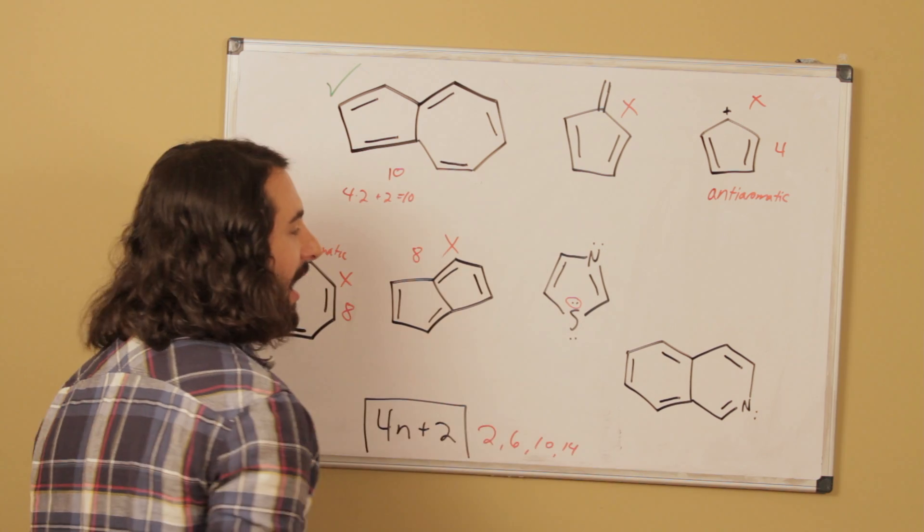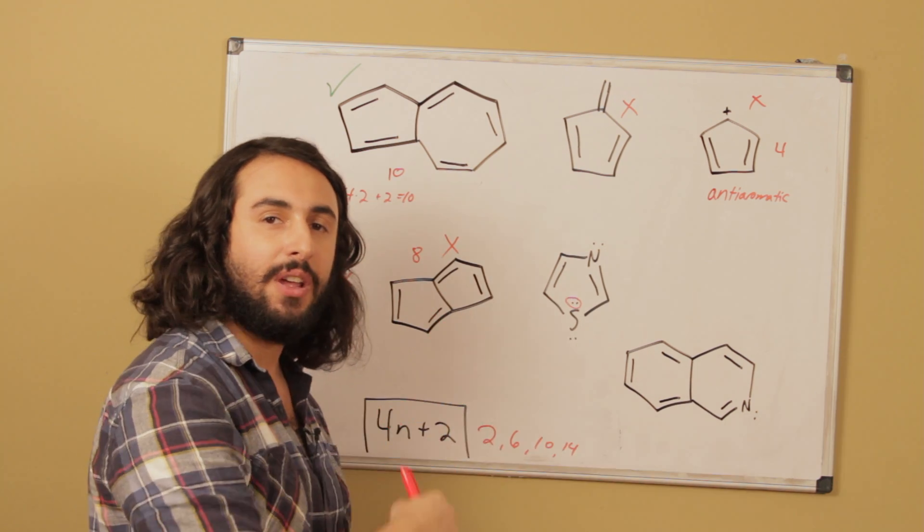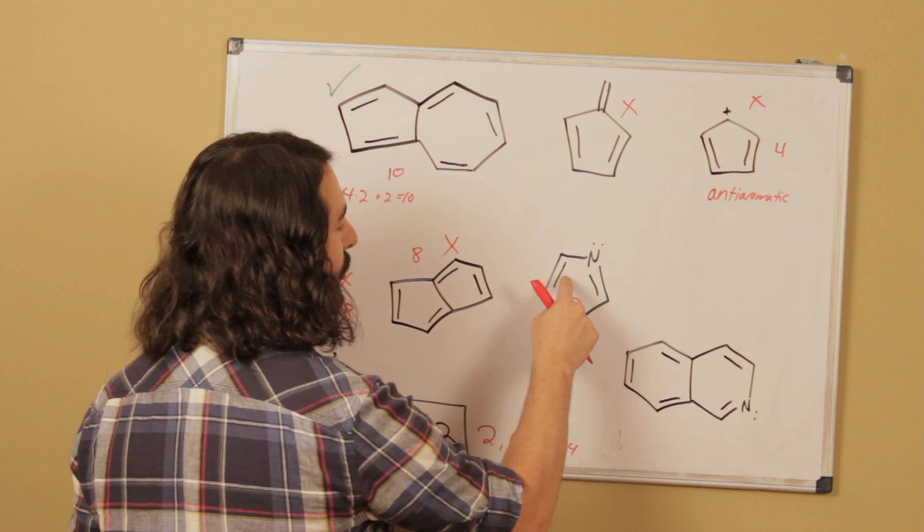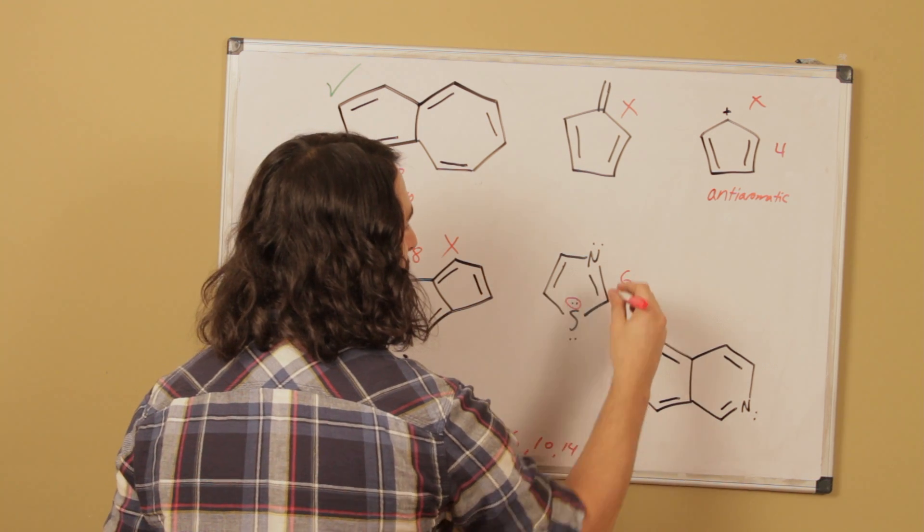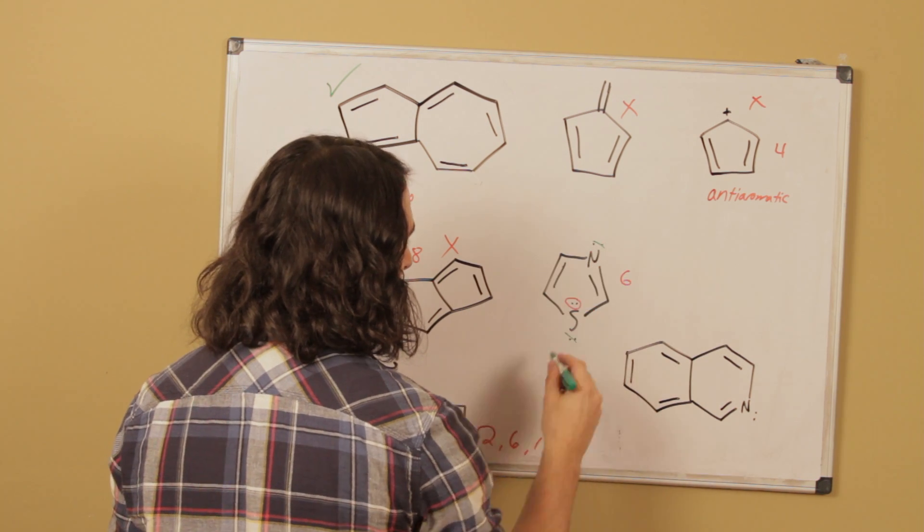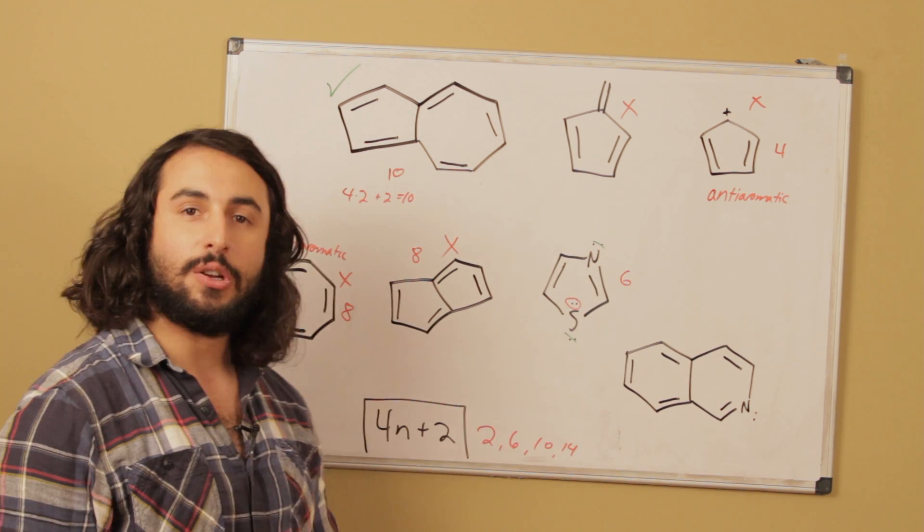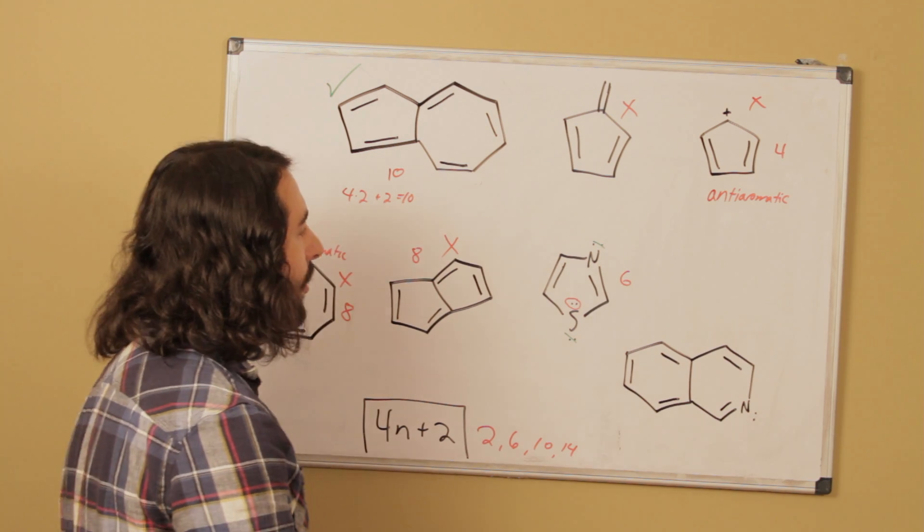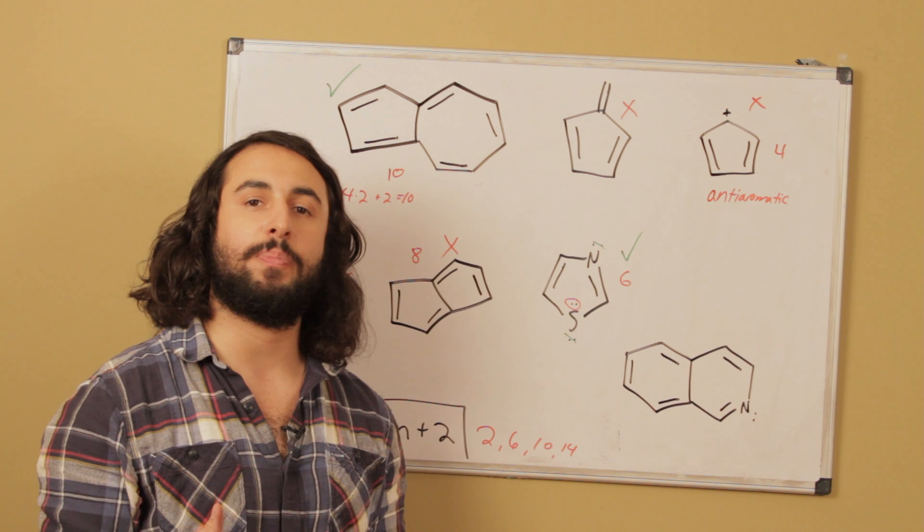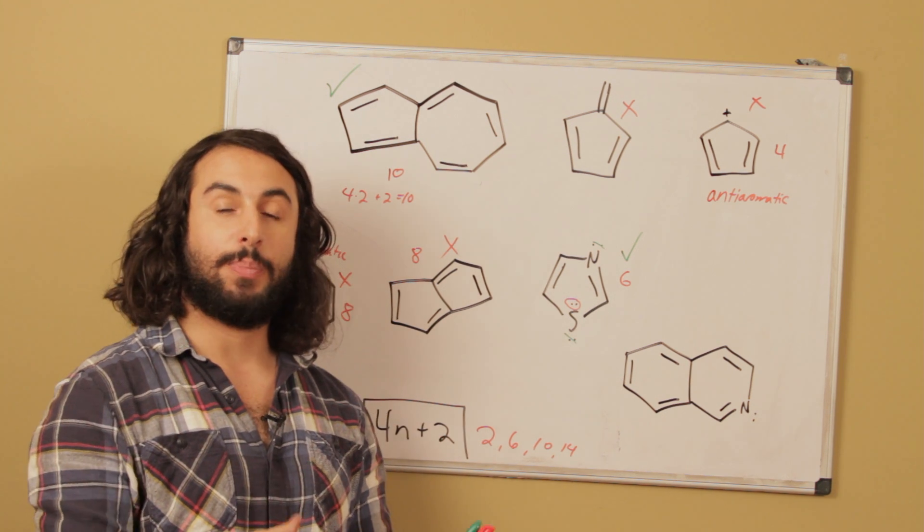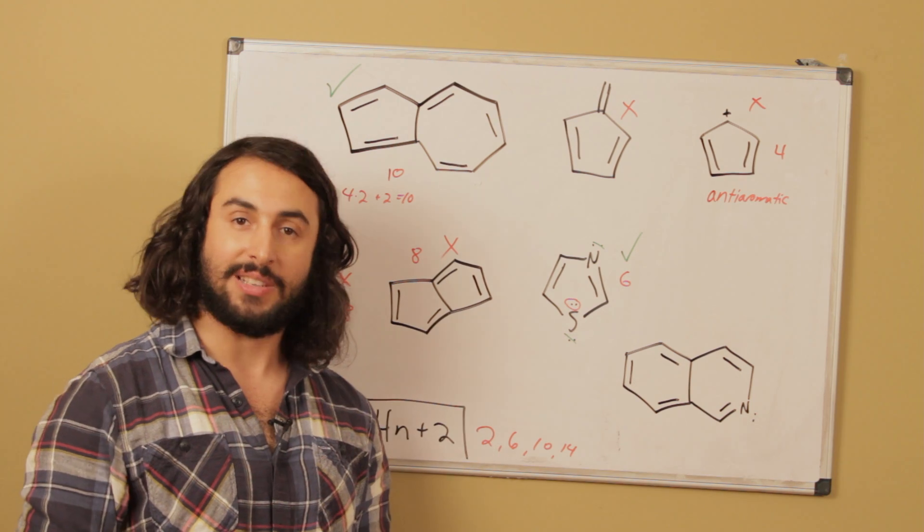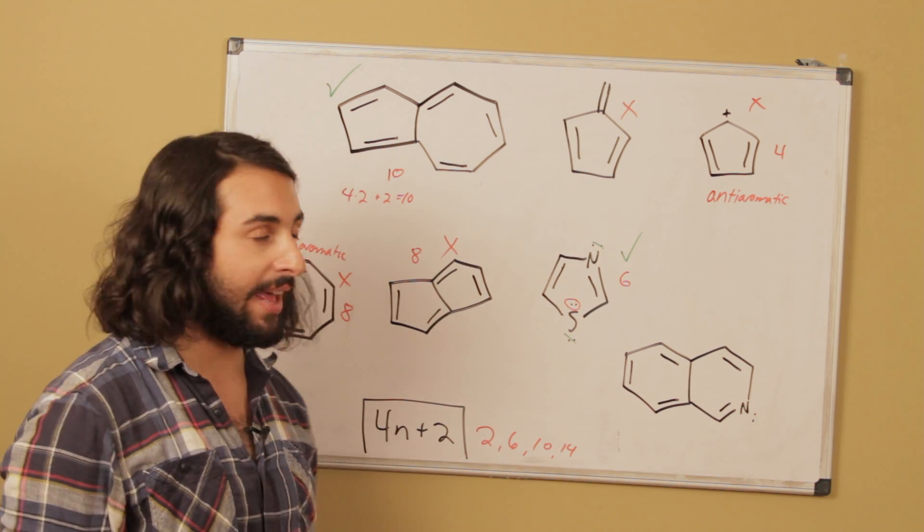And right here we're understanding that if this lone pair, if one of the lone pairs on the sulfur atom is participating then we can have pi electron density here, push that one there, push that one there and then we do in fact have a fully planar, fully conjugated pi system. And so if we have 2, 4, 6, if we have those 6 participating but not these and not these then that is going to satisfy Huckel's rule and that is going to be aromatic. So that's the interesting thing about heterocycles. The lone pairs may or may not participate in conjugation if they need to or must not in order for aromaticity to be the case.